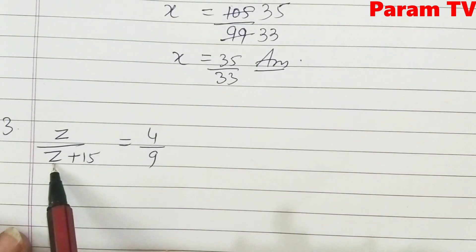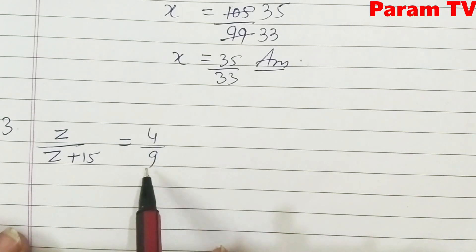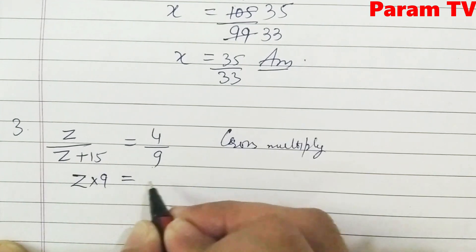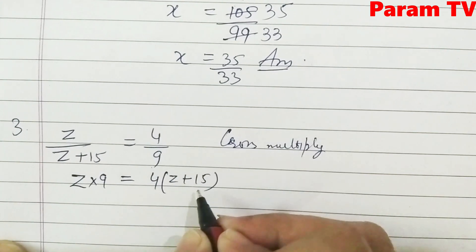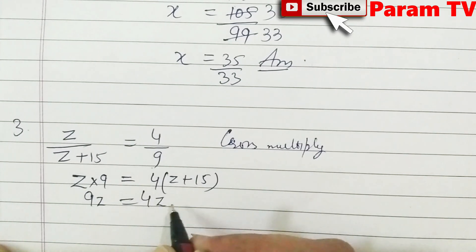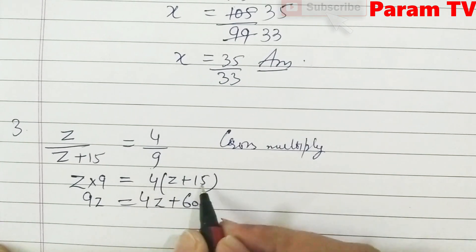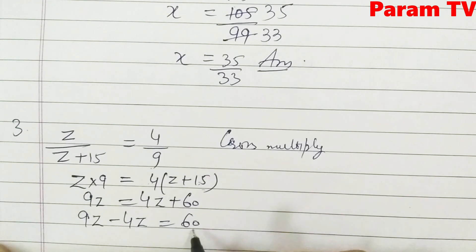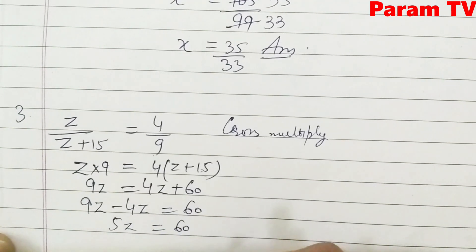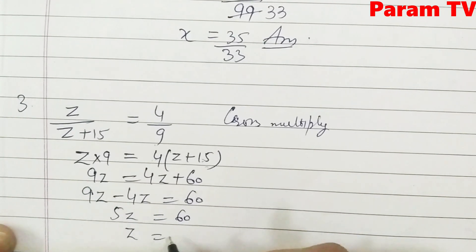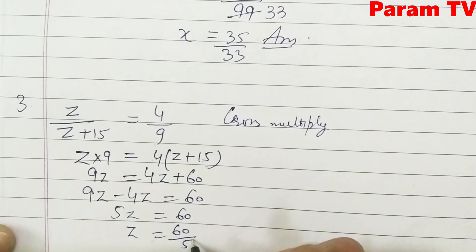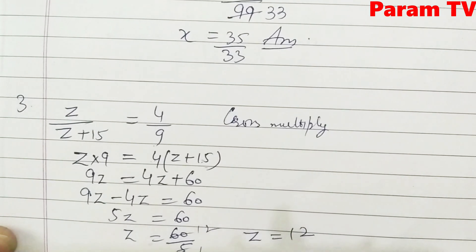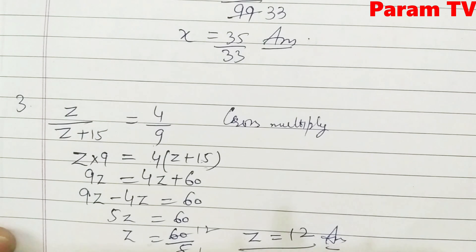Question number 3: z / (z + 15) = 4/9. Cross multiply: z × 9 = 4 × (z + 15), so 9z = 4z + 60. Transposing: 9z − 4z = 60, so 5z = 60, therefore z = 12. This is the required solution.